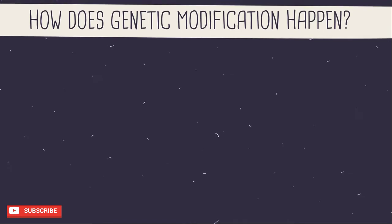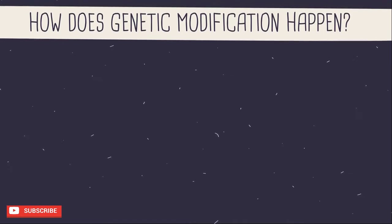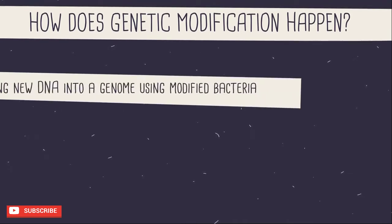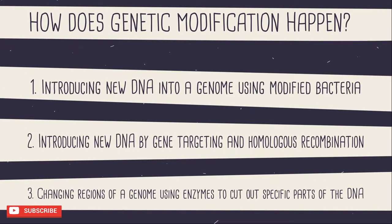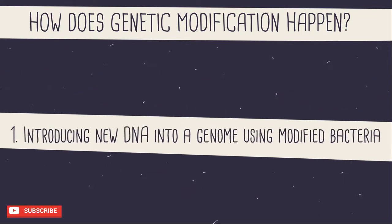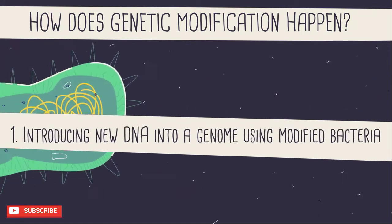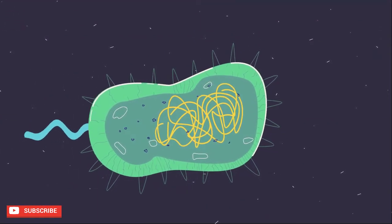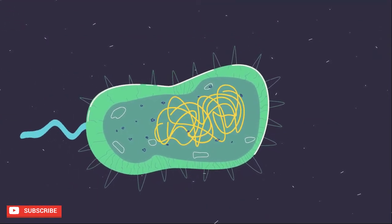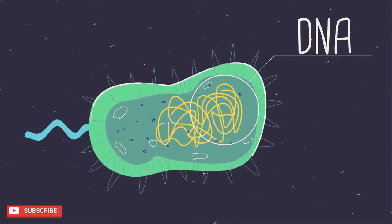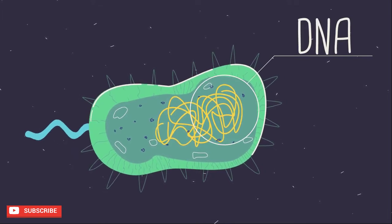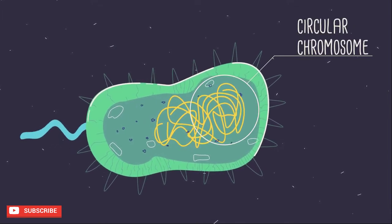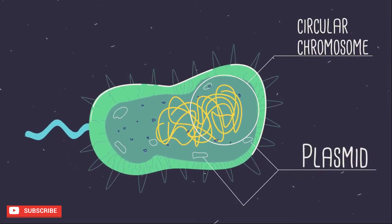Let's find out how genetic modification happens. There are several techniques that can be used to modify a genome, but the main one relies on bacteria. Bacteria are single-celled organisms that don't have a nucleus like our cells, but instead have one main circle of DNA called the circular chromosome and lots of tiny circles of DNA called plasmids.